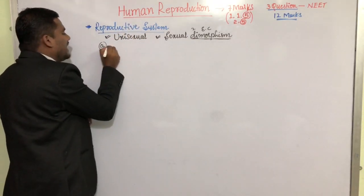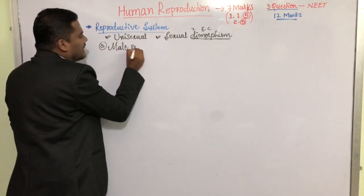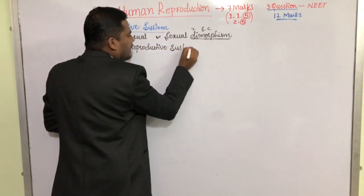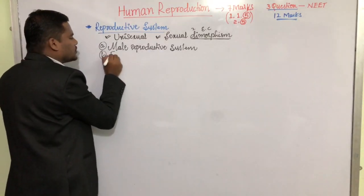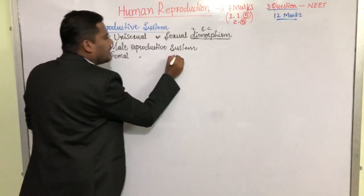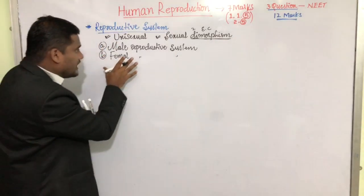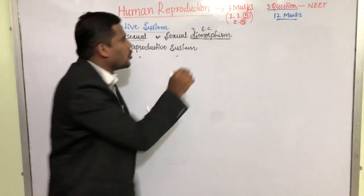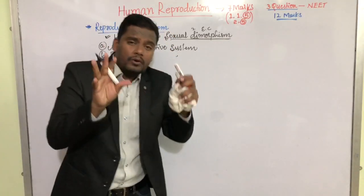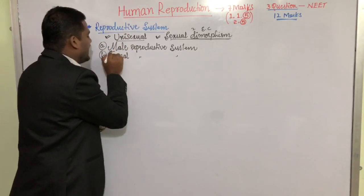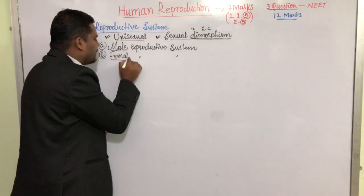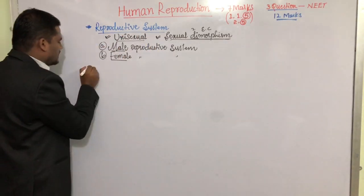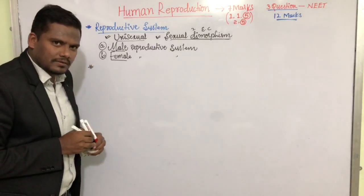Since we have unisexual conditions in human beings and we have sexual dimorphism, we are going to study the male reproductive system and the female reproductive system separately in this chapter. We study them separately because human beings are unisexual and show sexual dimorphism — the systems are located in two different individuals.